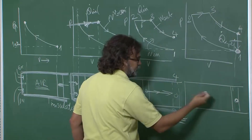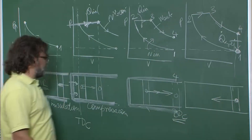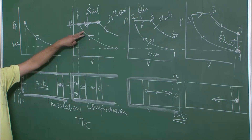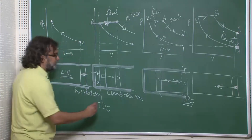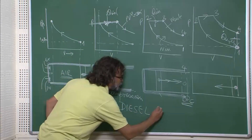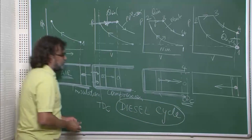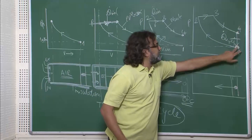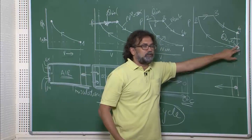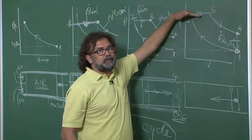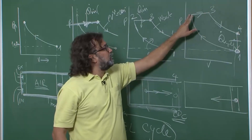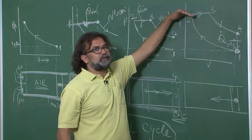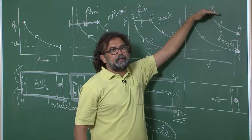From position one we can start compressing again and come back to the beginning. This cycle is distinctly different from the cycle studied in the last lecture. This cycle is called the diesel cycle. The main difference: the two adiabatic processes and the heat rejection process are still the same as in the Otto cycle. However, the heat addition from 2 to 3 — which was constant volume in the Otto cycle — is here a constant pressure heat addition process.